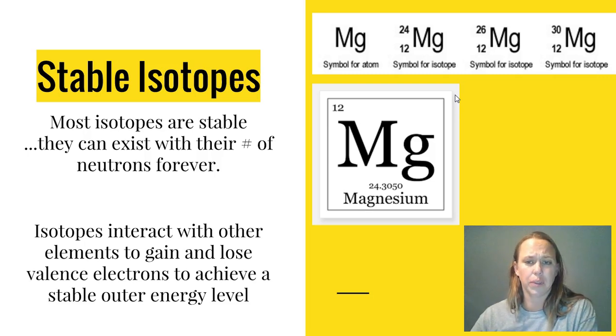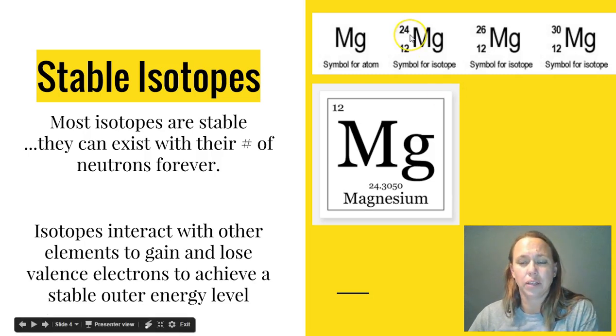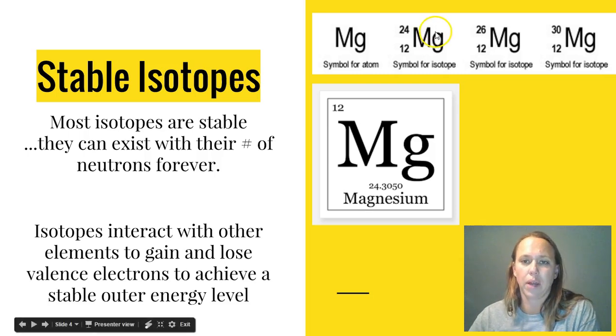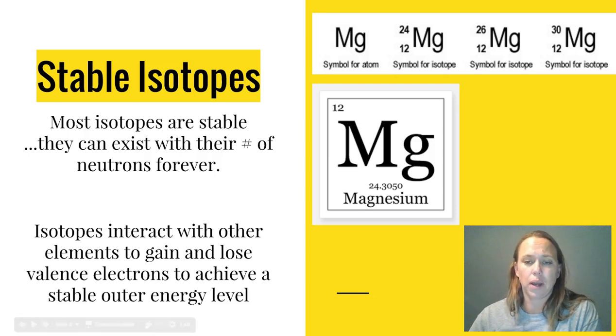Most isotopes are stable. They can exist with their different numbers of neutrons forever. Those neutrons are acting as a glue to help hold the nucleus together. So we've got the different isotopes for magnesium that are out there that give us the average mass of 24.3. These isotopes are atoms, so they're going to do just what atoms do.